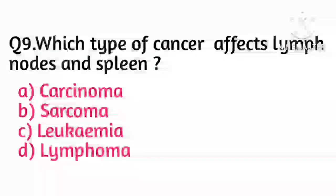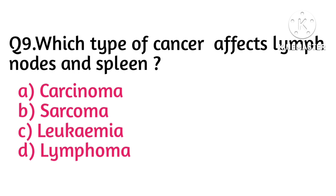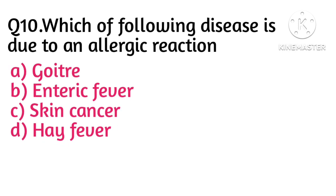Question number 9: which type of cancer affects lymph nodes and spleen? Option D is correct, that is lymphoma. Carcinoma is a type of cancer that affects epithelial tissue of the skin or tissue that lines internal organs such as the liver and kidney. Next question: which of the following diseases is due to an allergic reaction? Option D is correct — hay fever is due to an allergic reaction.